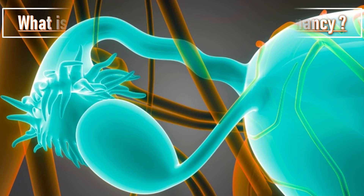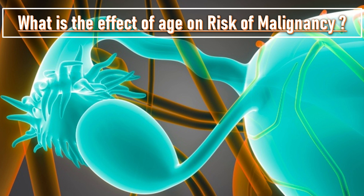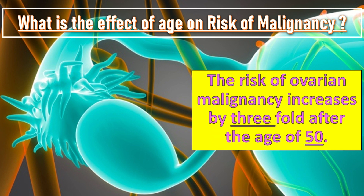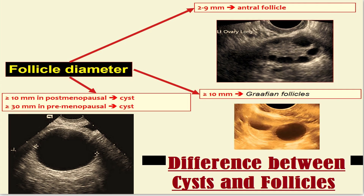The risk of ovarian malignancy increases threefold after the age of 50. Regarding the difference between cysts and follicles: a follicle diameter of 10 mm or more in postmenopausal women is indicative of a cyst, while in premenopausal women, 30 mm or more would be classified as a cyst. Antral follicle diameter is 2 to 9 mm, and Graafian follicles are 10 mm or more.